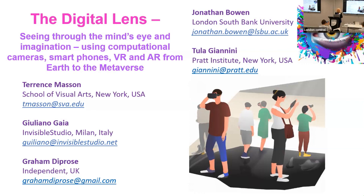In doing my research, I found that Paul Klee, the artist, wrote something called The Thinking Eye in 1914. He was way ahead of his time. It's a magnificent work, a few hundred pages, and he was very much into color coding. So he was obviously thinking about something like the digital lens.